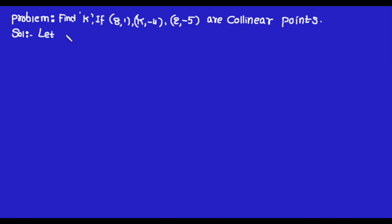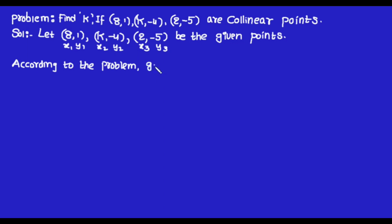Solution: Let A(8,1), B(k,-4), C(2,-5) be the given points. Also, let their coordinates be x1,y1, x2,y2, and x3,y3. According to the problem, the given points are collinear.